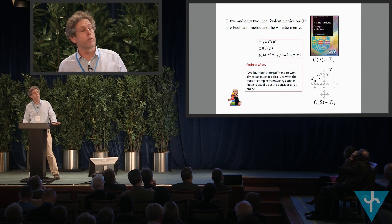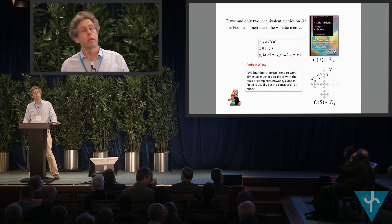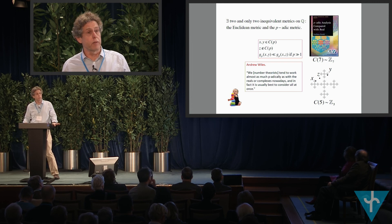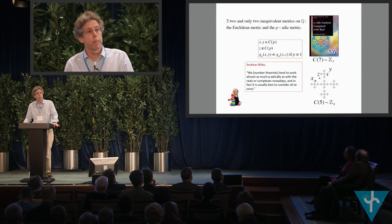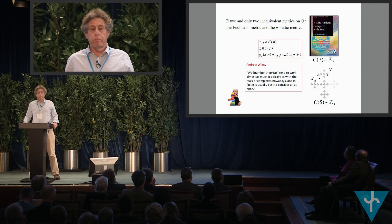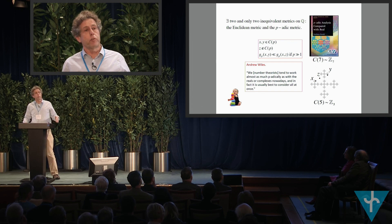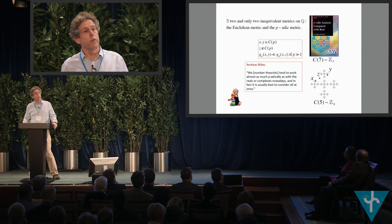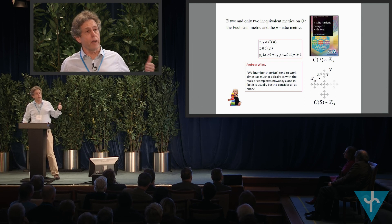In number theory, by a famous theorem called the Ostrovsky theorem, there are two and only two inexact ways of defining a metric on the set of rational numbers: one is the familiar Euclidean metric, and the other is the so-called p-adic metric. To understand p-adic metrics and p-adic numbers, it's useful to utilize the correspondence between p-adic metrics and fractals.